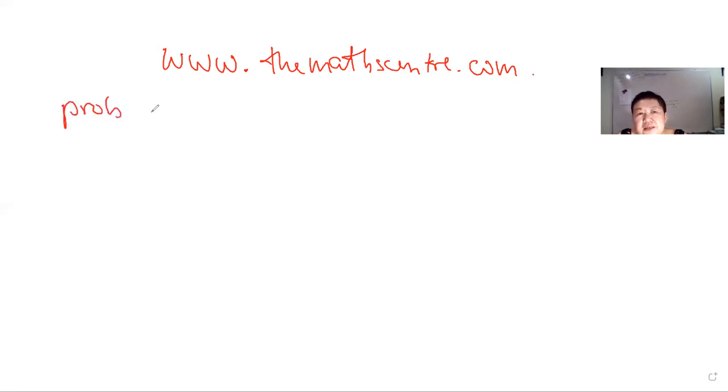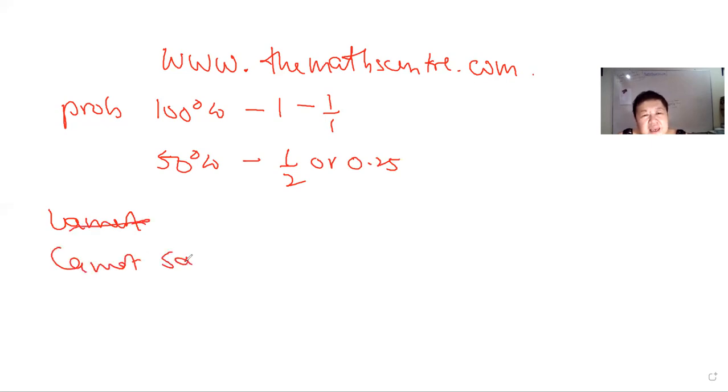Remember, probability at the best, when it's 100% for sure, is only one. One is actually one over one. So probability which is 50% is written as half, or 0.5, or 0.25 as a quarter. You cannot, I repeat, cannot say your probability is more than one. Impossible.